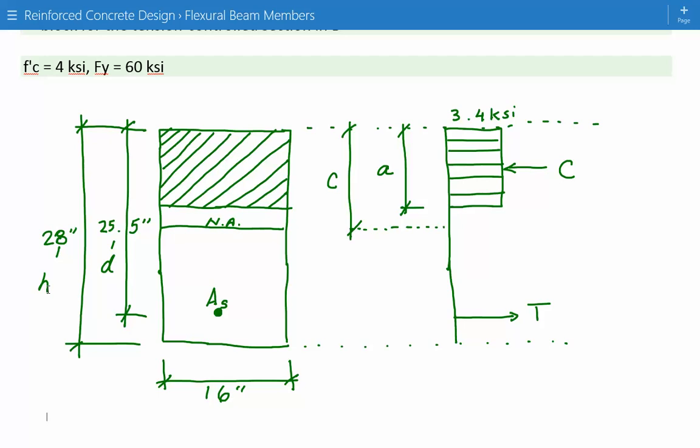We're showing the neutral axis. The width is 16 inches. A is the length of the compressive stress block, the equivalent Whitney stress block. C is the distance from the extreme compression fiber to the neutral axis. Then we have our resultant forces, the compression on top and tension on bottom.